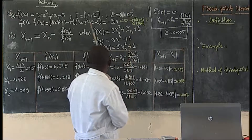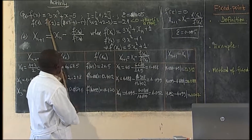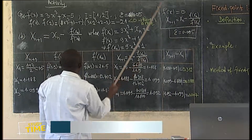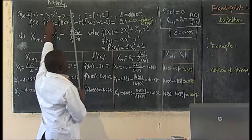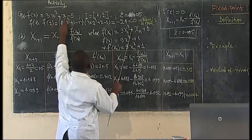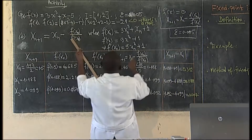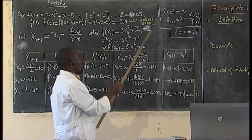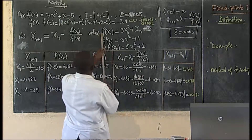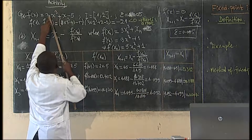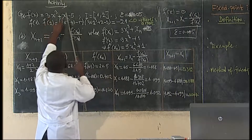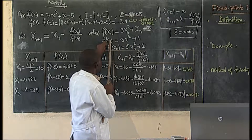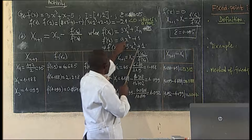Then, from our function, we need f(x(n)) in the formula. It means that x will be replaced by x(n). So f(x(n)) = 3x(n)³ + x(n) - 5. And we need also the derivative of the function. As our function is there, the derivative is 3 × 3x² = 9x² + 1. So the derivative at x(n) is 9x(n)² + 1.